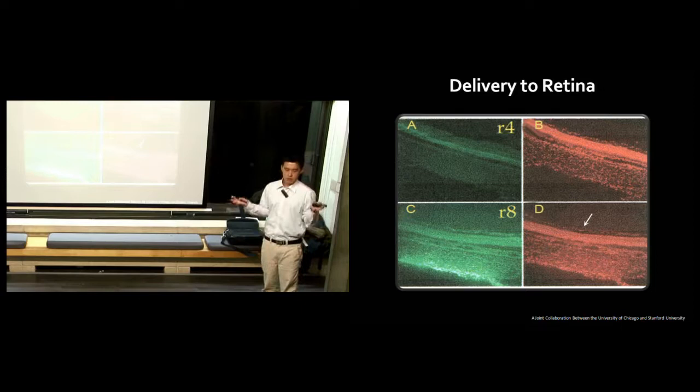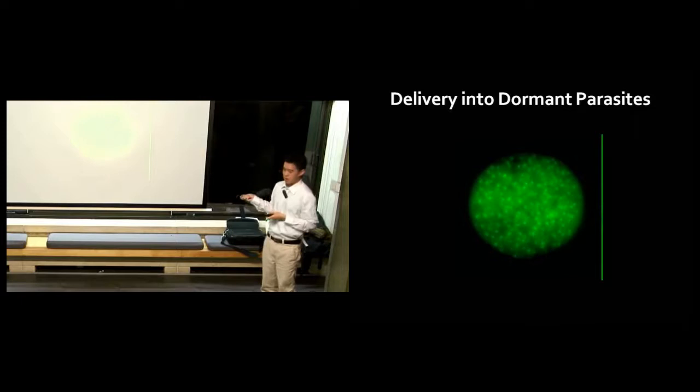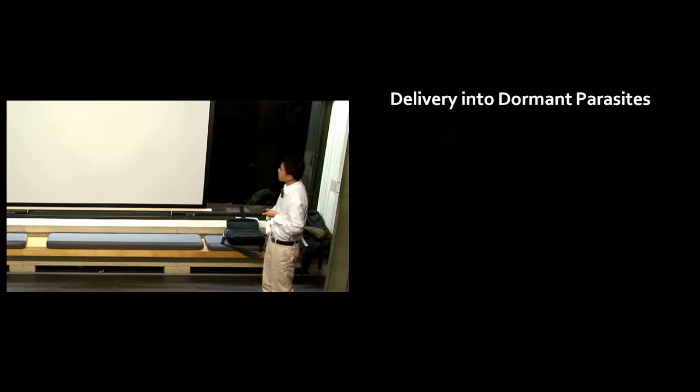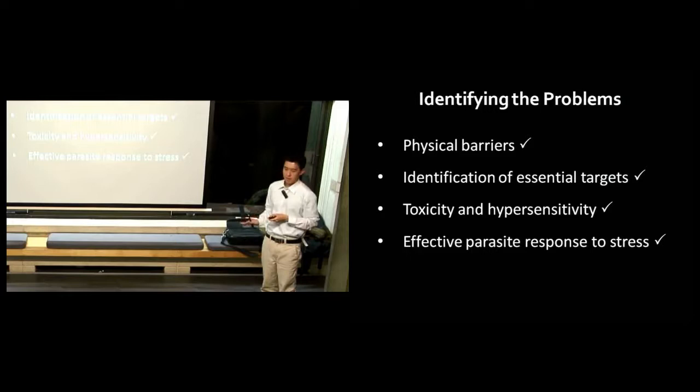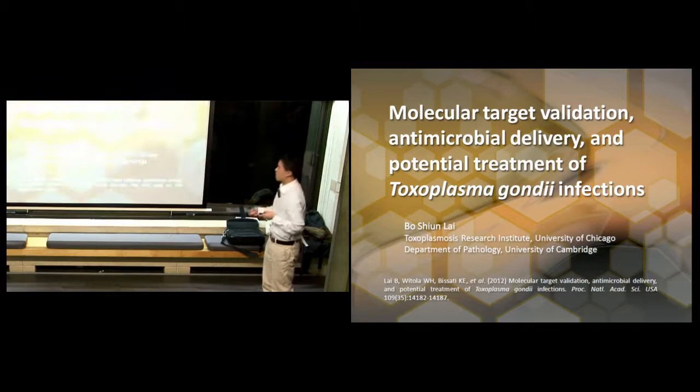How about delivering inhibitors into the cyst? We used those exact same morpholino oligomers. We treated a cyst with hundreds of dormant parasites inside. We saw the green fluorescent probes went all the way into the cyst. So we've solved the four main problems associated with treating toxoplasmosis.